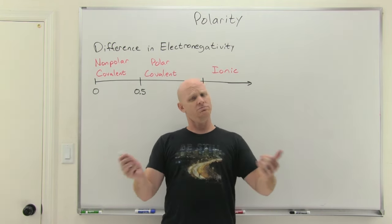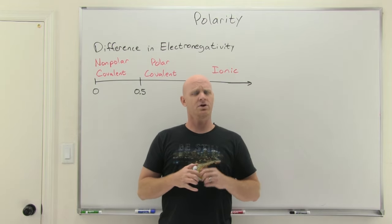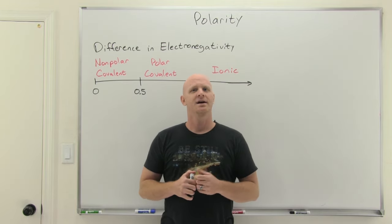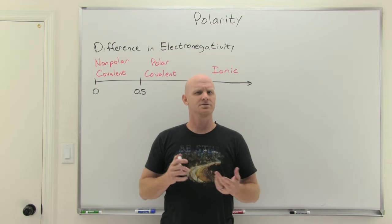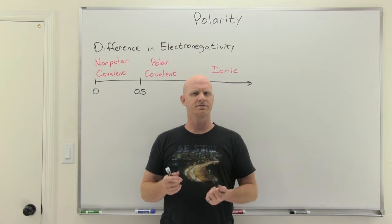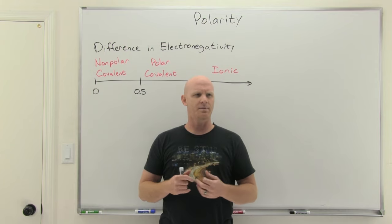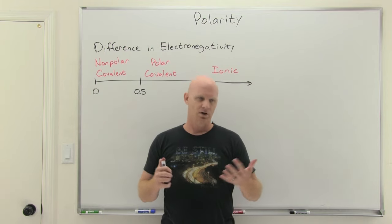I said metal and non-metal: ionic. Two non-metals: covalent. And then we just said two non-metals — usually if they're different, but not carbon and hydrogen — they're probably going to be polar.